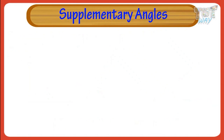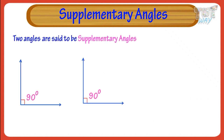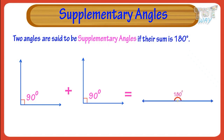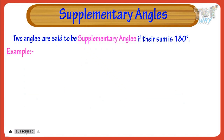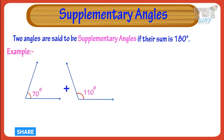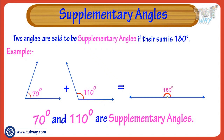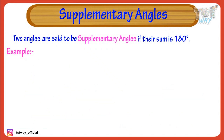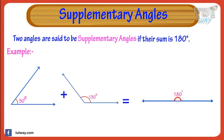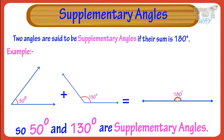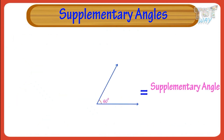Now let's learn what are supplementary angles. Two angles are said to be supplementary angles if their sum is 180 degrees. For example, 70 plus 110 equals 180, so they are supplementary angles. Another example: 50 plus 130 equals 180, so they are supplementary angles. If we have an angle and we have to find its supplementary angle, we subtract it from 180 degrees.